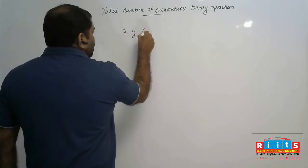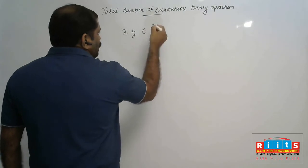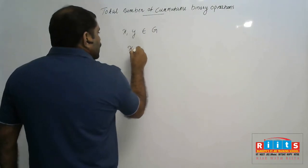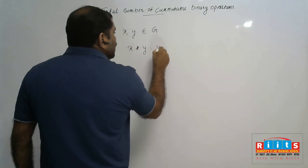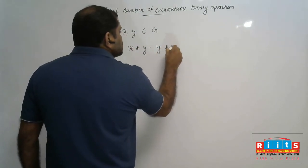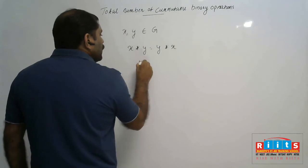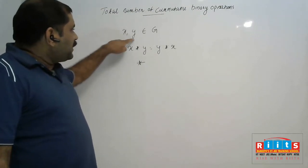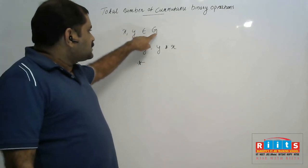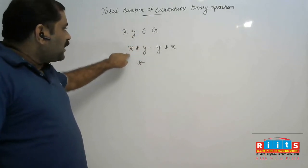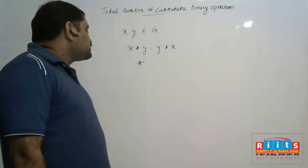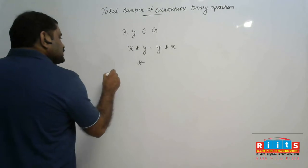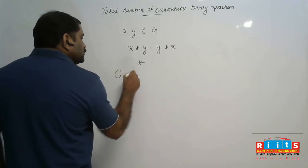Commutative binary operation means: suppose x and y are two elements in a set G. If x★y is equal to y★x, then ★ is called a commutative binary operation.